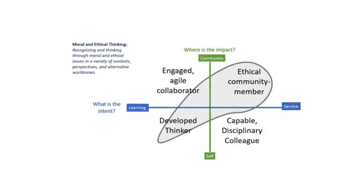For example, activities that can help learners achieve the pursuit of recognizing and thinking through moral and ethical issues in a variety of contexts, perspectives, and alternative worldviews may help them to learn and contribute in ways that can benefit them as an individual as well as the larger community, while touching on all four quadrants.